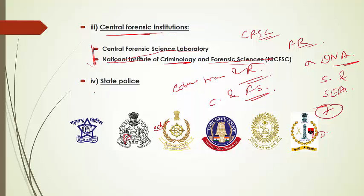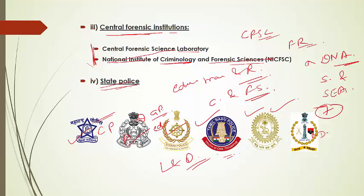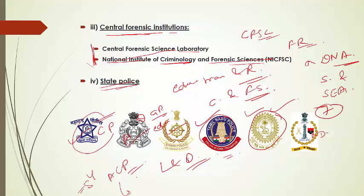Apart from national-level agencies, we have various state police forces. Each state and union territory has a state police force headed by a Commissioner of Police or Director General of Police, depending on the respective policing structure. State police is responsible for maintaining law and order in townships and rural areas. States such as Kerala, Tamil Nadu and Maharashtra have taken steps to get their police forces trained by advanced institutions like Scotland Yard, Atlanta City Police of the USA and World Police Academy of Canada. Tamil Nadu Police Academy is now seeking university status.